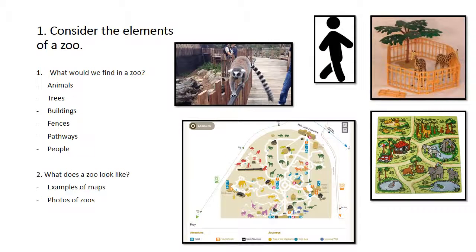The first part of the design phase requires you to sit with children and consider the elements of a zoo. This could be done by asking questions such as, what do we find in the zoo? Children may give answers such as animals, trees, buildings, fences, pathways, or people. You could then ask them, what does the zoo look like? Some children may be unfamiliar with what a zoo actually looks like, so you may like to include examples of maps or photographs that have been taken at the zoo.